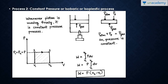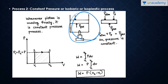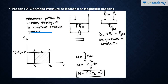The second process is the constant pressure process, also called the isobaric process or isopiastic process. For a constant pressure process in a piston-cylinder arrangement, the piston should move freely. Whenever the piston is moving freely, it is a constant pressure process. For a constant volume process, the piston is fixed; for a constant pressure process, the piston moves freely.